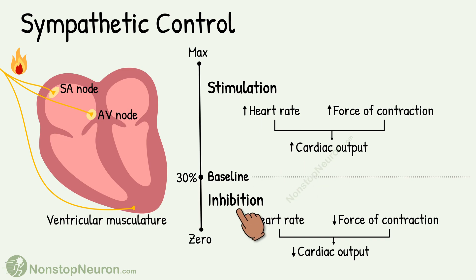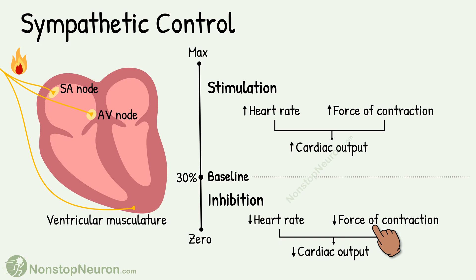On the other hand, inhibition of the baseline activity results in decreased pumping. This occurs by a decrease in heart rate due to a decrease in SA nodal activity, and a decrease in the force of contraction by the ventricular muscle fibers. The net result is a decrease in cardiac output.